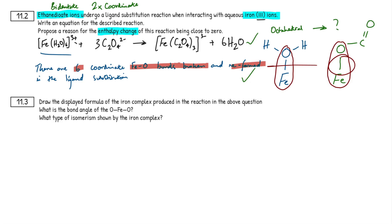For question 11.3 we need to draw the displayed formula of the iron complex produced above, state the bond angle, and identify the type of isomerism shown. Three stages to this question. 'Displayed formula' just means you need to display every single bond — it's in the word. Bond angle and isomerism we'll get to in a second; let's start by drawing the complex.